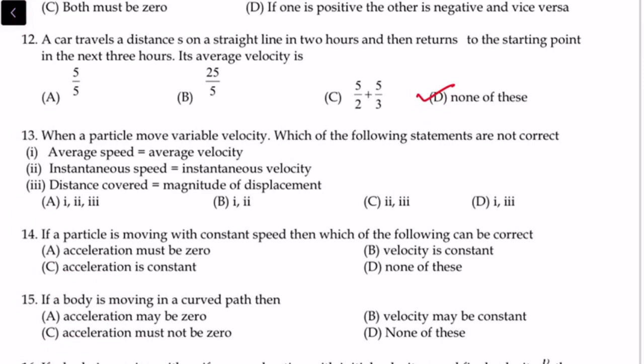Question 13: When a particle moves with variable velocity, which statement is correct? The first statement — that average speed and average velocity are equal — is wrong, because with variable velocity instantaneous speed and velocity differ. Also, distance covered and magnitude of displacement need not be the same. The question asks which statements are NOT correct, and the answer is D (both first and third statements are incorrect).